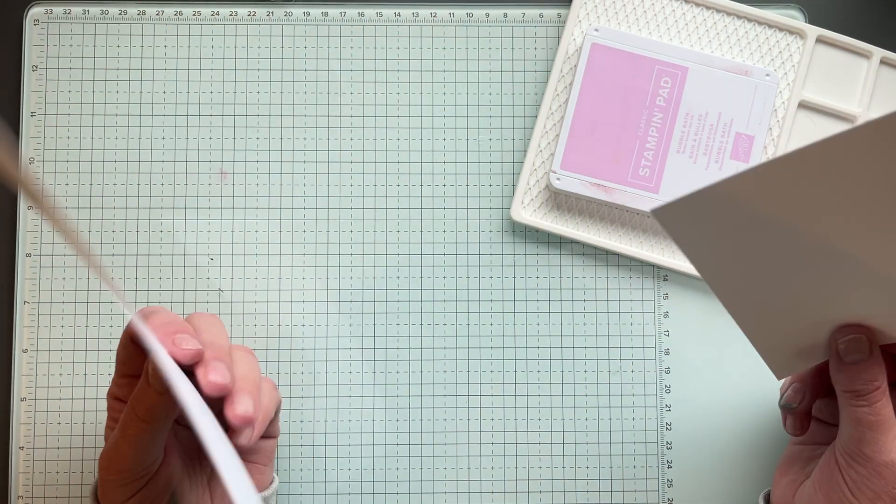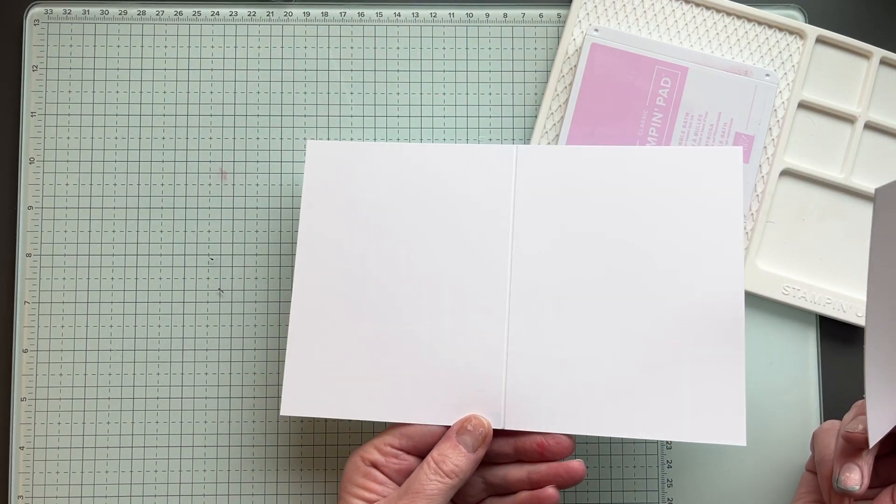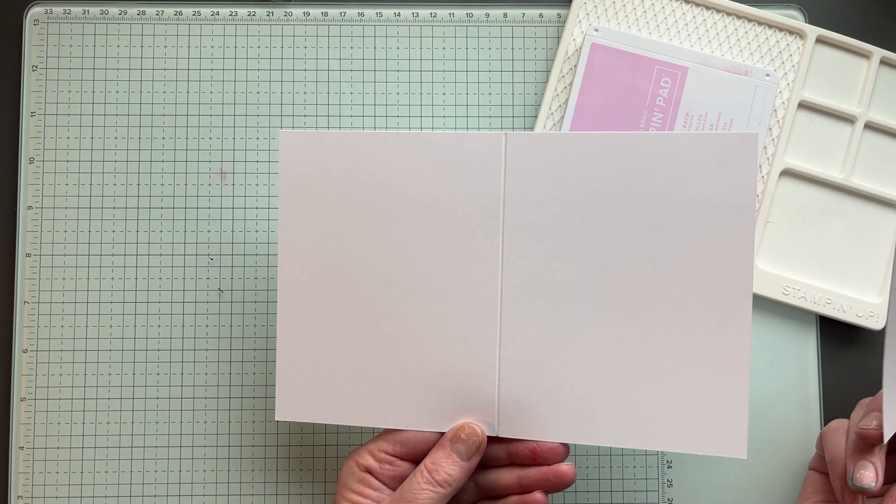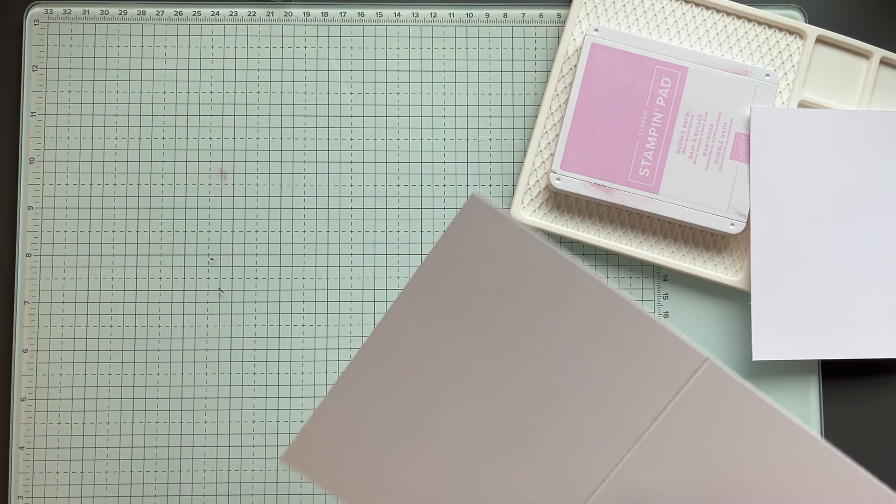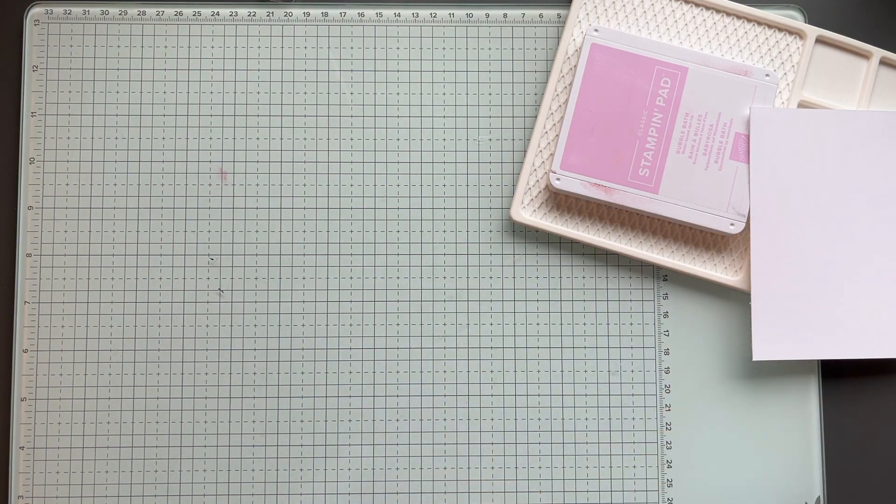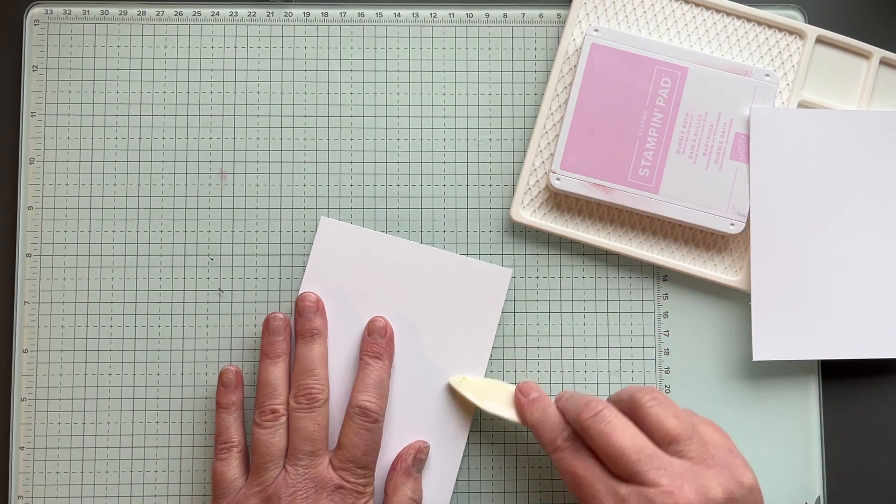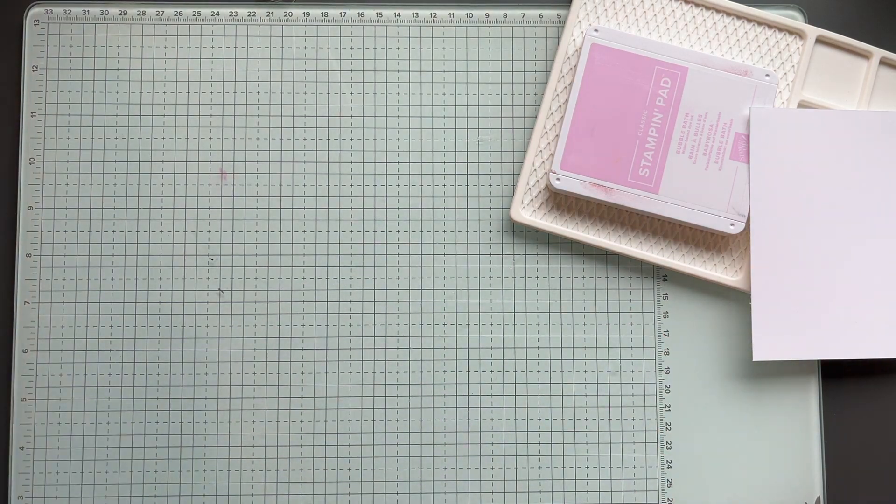So to start with our card measurements, super easy: five and a half by eight and a half, score it at four and a quarter, your standard card base. We'll just fold that and then set that aside so you don't get any ink on it.